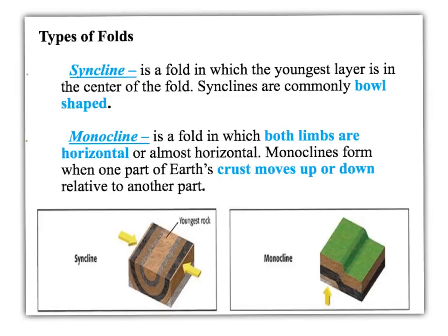The next type of fold is a syncline, which is the opposite of an anticline. It makes a U-shaped or bowl-shaped form. In an anticline, the oldest rock was in the center of the fold. In a syncline, the youngest rock is in the center of the fold. It's like if you held your piece of paper and squeezed both ends — this would be the paper folding down instead of up, making that valley shape, that bowl shape.